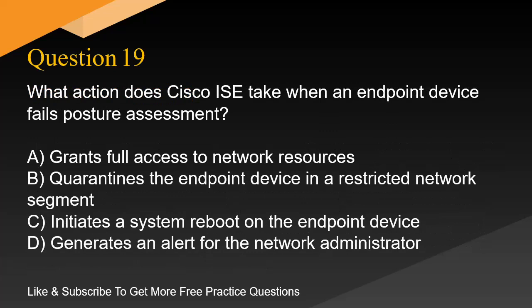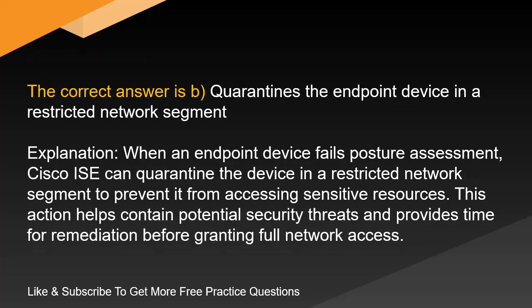Question 19. What action does Cisco ISE take when an endpoint device fails posture assessment? A. Grants full access to network resources. B. Quarantines the endpoint device in a restricted network segment. C. Initiates a system reboot on the endpoint device. D. Generates an alert for the network administrator. The correct answer is B. Quarantines the endpoint device in a restricted network segment.